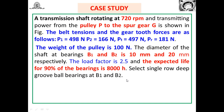The problem statement: a transmission shaft rotating at 720 rpm transmits power from pulley P to gear G as shown in the figure. The belt tensions are given: P1 (tight side) = 498 N, P2 (slack side) = 166 N. The gear forces are: tangential force Pt = 497 N and radial force Pr = 181 N.